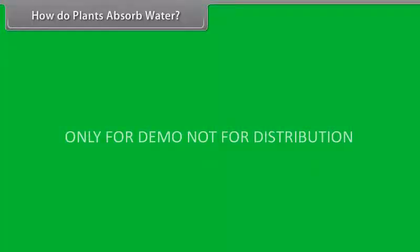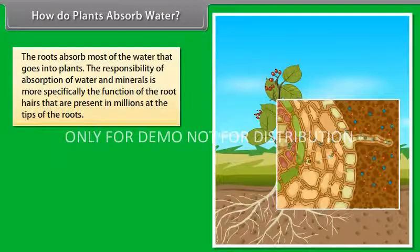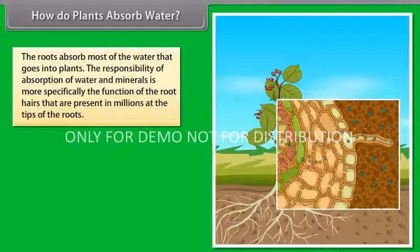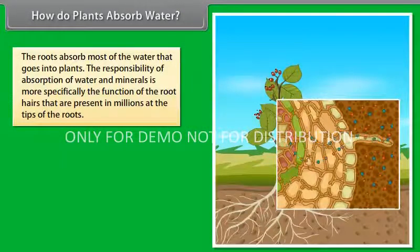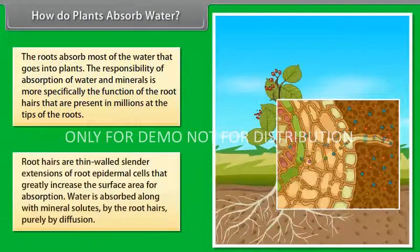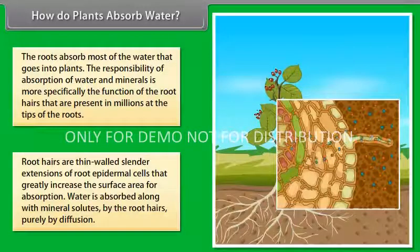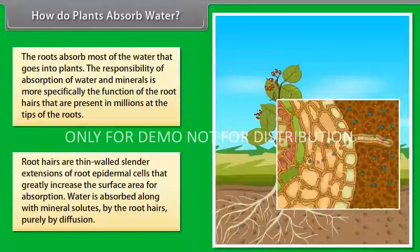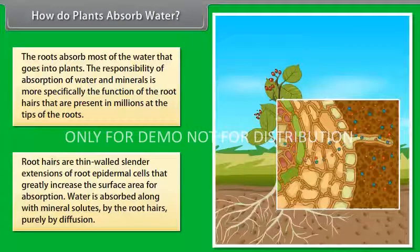How do plants absorb water? Now let us understand how plants absorb water. The roots absorb most of the water that goes into plants. That is why we give water to the soil and not on the leaves. The responsibility of absorption of water and minerals is more specifically the function of the root hairs that are present in millions at the tips of the roots. Root hairs are thin-walled, slender extensions of root epidermal cells that greatly increase the surface area for absorption.